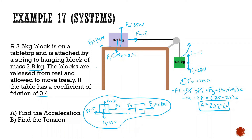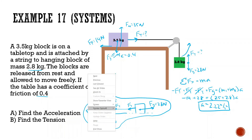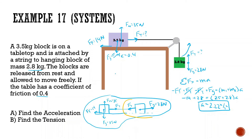For part B, finding tension, we isolate one free-body diagram. I'm going to use the hanging block. Sum of forces in x equals mass times acceleration: force of gravity minus force of tension equals M2 times acceleration. So 28 minus force of tension equals 2.8 times 2.22. Force of tension equals 28 minus 2.8 times 2.22, giving us 21.8 newtons.